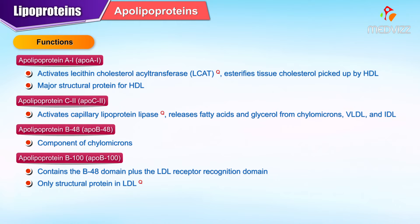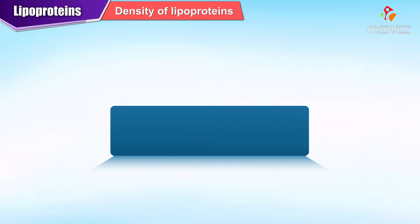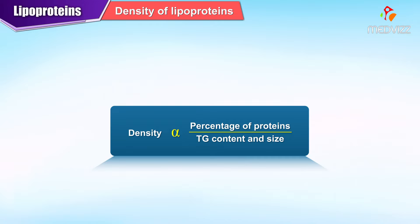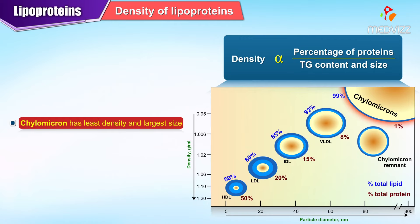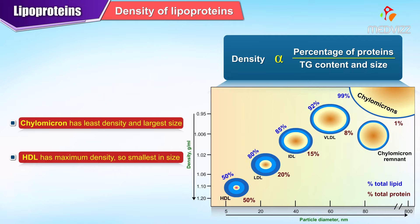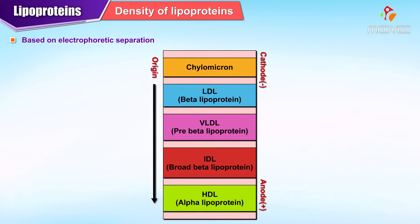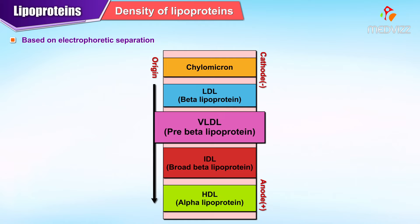Apolipoprotein E mediates uptake of chylomicron remnants and intermediate density lipoproteins by the liver. Density is directly proportional to the percentage of proteins and inversely proportional to triglyceride content and size. Chylomicrons have the least density and largest size, maximum triglyceride content and minimum proteins. HDL has maximum density, smallest size, minimum triglycerides and maximum proteins. Based on electrophoretic separation from cathode to anode, the order in an electrophoretogram is: chylomicron, LDL (beta lipoprotein), VLDL (pre-beta lipoprotein), IDL (broad beta lipoprotein), and HDL (alpha lipoprotein).